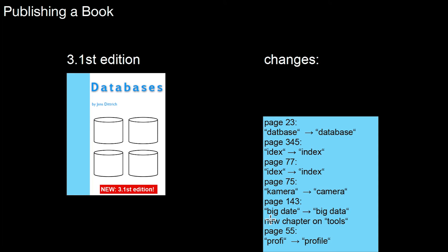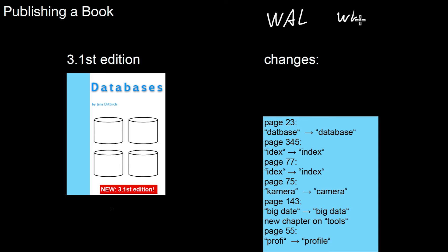That is what logging is about. You collect changes in the list but you also apply them. When we look at specific algorithms later on, we will learn that it is often required that you first write to the change list and then apply it to this edition. This is also called write-ahead logging. It's not an absolute requirement for all methods but for many of them. We will get back to that.